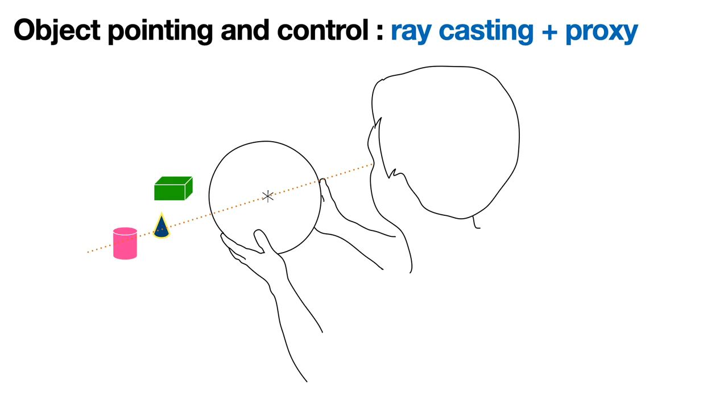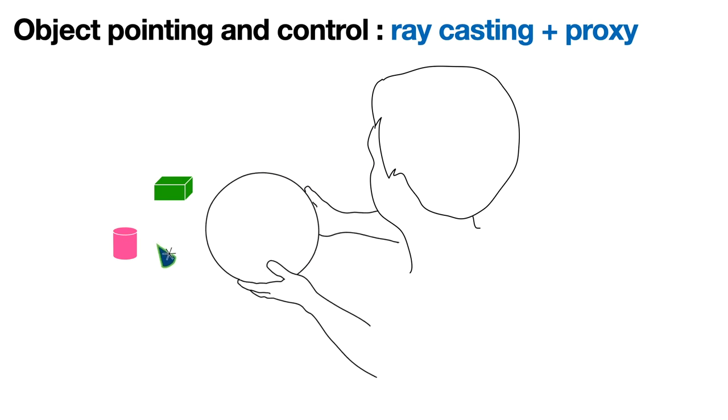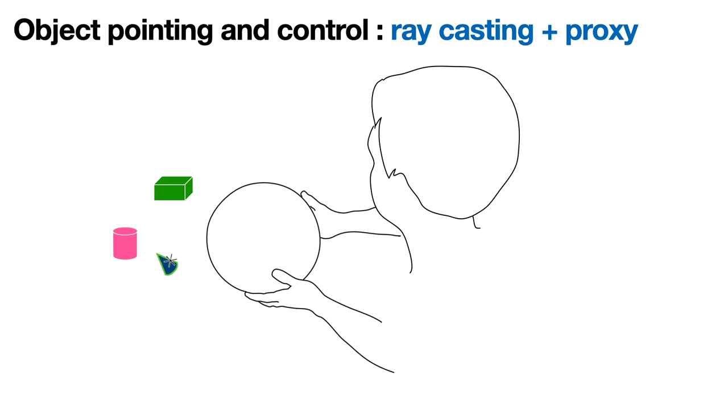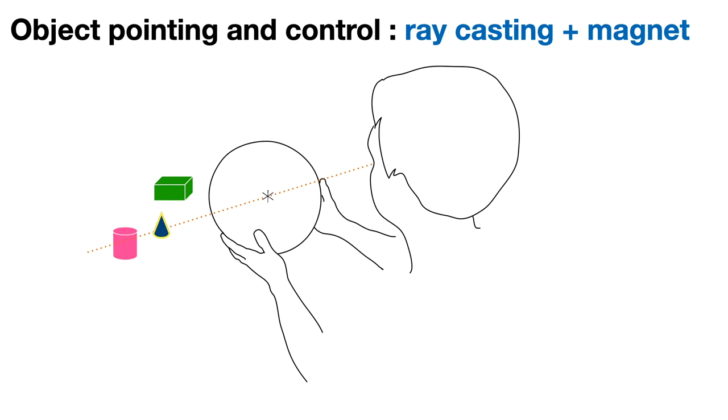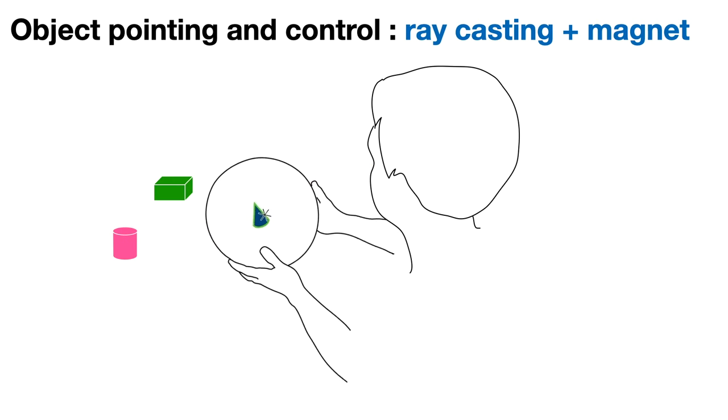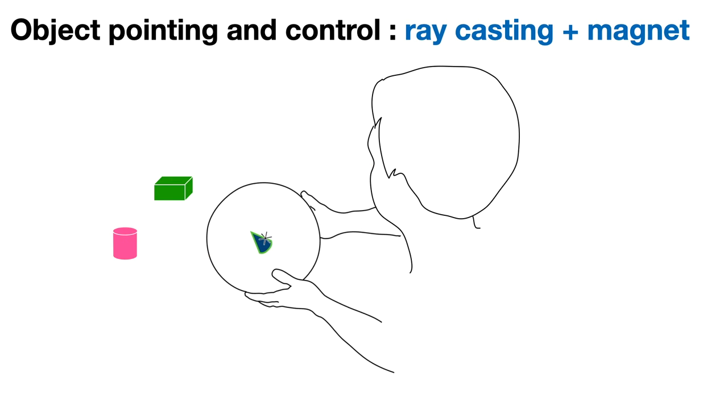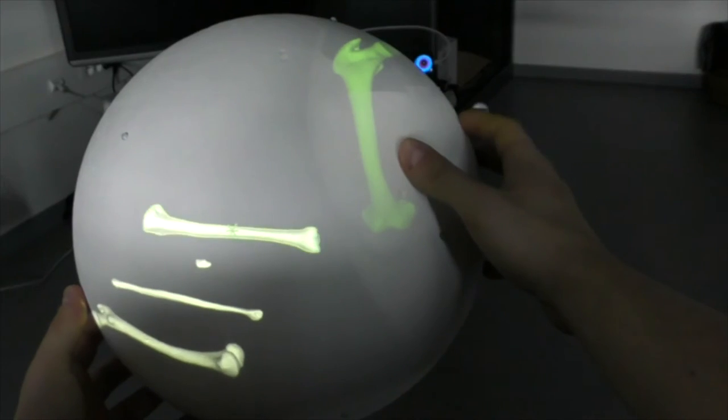With proxy cursor, the pointer jumps to the object. From then on, the transformations on the display are reproduced on the cursor and the object. With the magnet cursor, it is the object that jumps to the cursor on validation. Here we show the magnet cursor on the actual system.